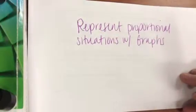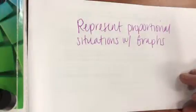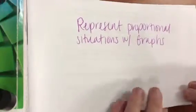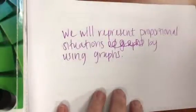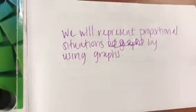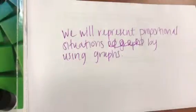And if you don't realize this, graphs, tables, equations, they're all related. They're all going to be the same thing. You're going to be able to interchange between all of the different representations. You will eventually be given one representation and have to change it to a table, graph, equation, everything. So our learning target today is we will represent proportional situations by using graphs. Please make sure this is written into your journal.